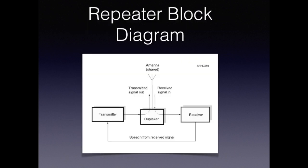Let's deepen our understanding of what a repeater is by looking at a block diagram. Obviously, a repeater needs a transmitter as well as a receiver. It also needs an antenna and some feed line to go from the transceiver to the antenna. A repeater also uses a device called a duplexer, and what this does is facilitate sharing the antenna between the receiver and the transmitter, so both things can occur simultaneously or concurrently.